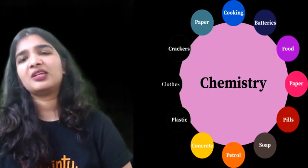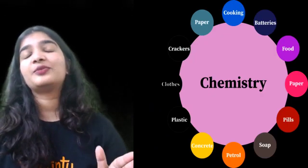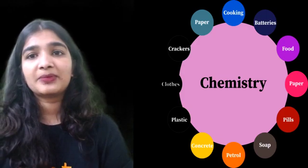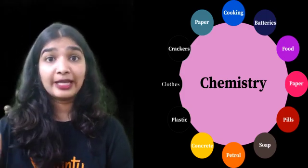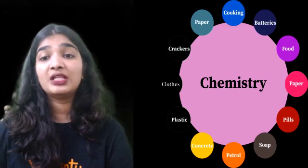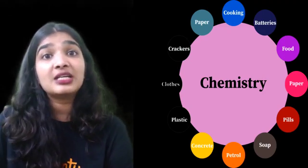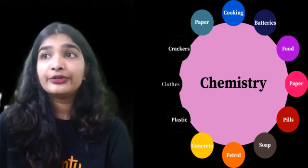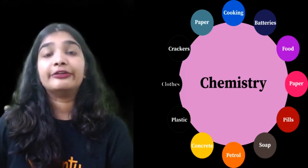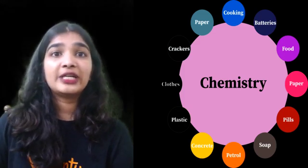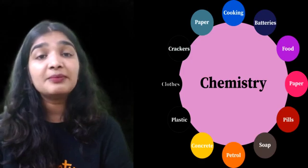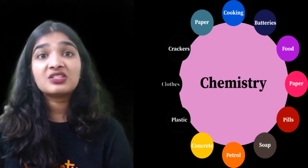You name something and you can explain that using chemistry: cooking, batteries - electrochemistry, food, paper industry, pills, soap, petrol - fractional distillation. Take crude oil, do fractional distillation, then you will get different fuels like petrol, diesel, gasoline. Concrete, cement, plastic, clothes - chemistry.